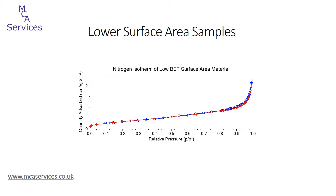Not all of the samples we analyze here at MCA Services have high surface areas. We routinely analyze samples with BET areas below 10 square meters per gram, even below 1 square meter per gram. Surface area is still critical to the understanding, the development, and the production of many materials with a wide variety of applications and from a diverse range of industries.